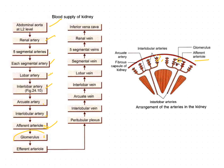The full flowchart: abdominal aorta (L2) → renal artery → five segmental branches → lobar artery → interlobar artery → arcuate artery → interlobular artery → afferent arteriole → glomerulus → efferent arteriole → peritubular capillaries → interlobular vein → arcuate vein → interlobar vein → lobar vein → segmental vein → renal vein → inferior vena cava.